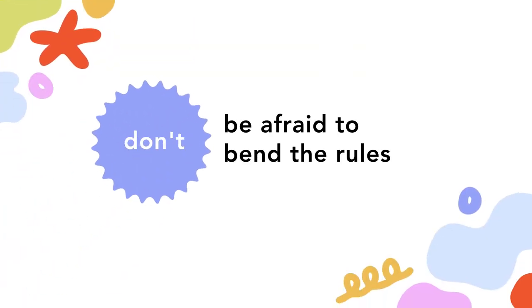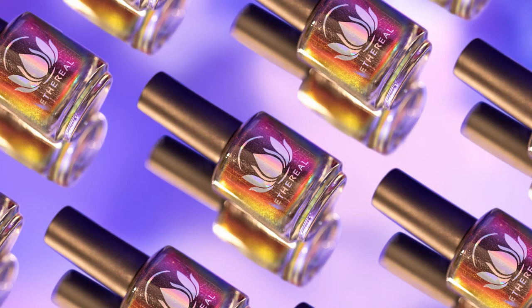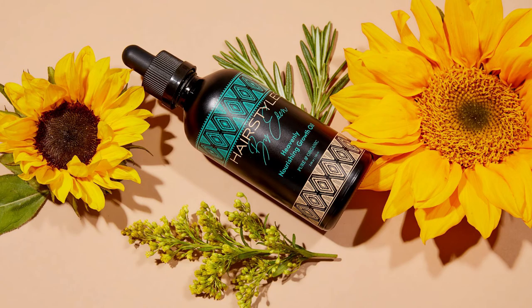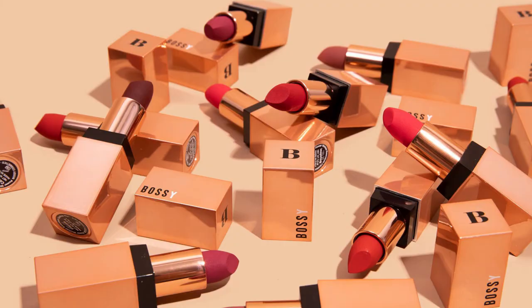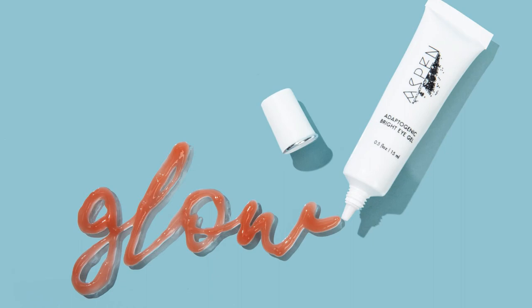Don't be afraid to bend the rules. Technically, a flat lay should be a shot from directly overhead — a bird's eye view of a totally flat surface. But that's perhaps a little too strict, and rules are made to be bent and broken. No one likes a flat flat lay. We love experimenting with unique angles to create interest and depth to a shot. If you do want a more literal flat lay image, make sure to shoot directly overhead with a totally squared-up frame to capture the best straight-on shot.